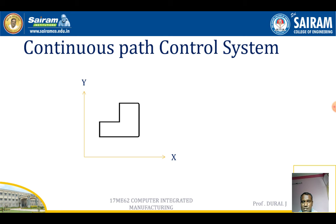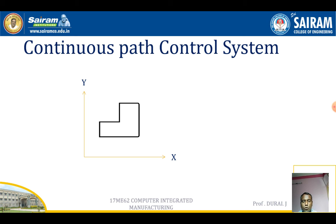The continuous path control system, also called the contour path control system, can provide curved shapes along edges. It can produce curved shapes using the contouring method — either clockwise or anticlockwise. This contouring control system helps move the tool in a circular method.